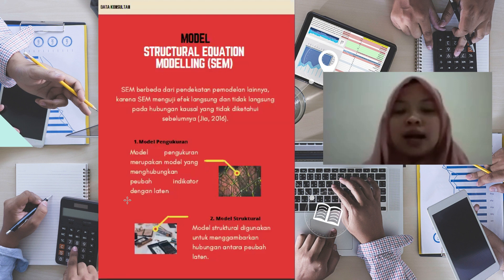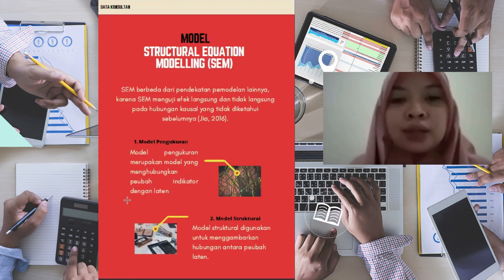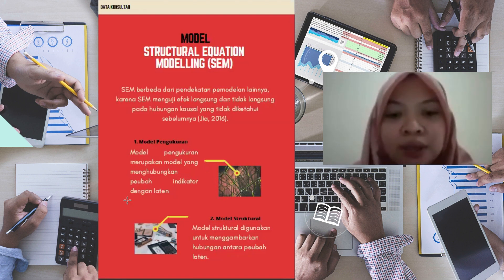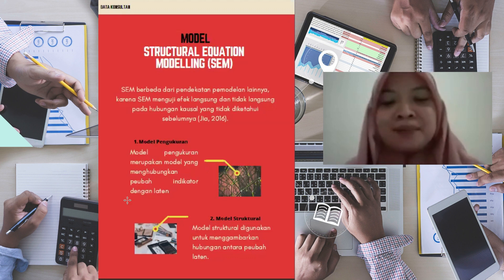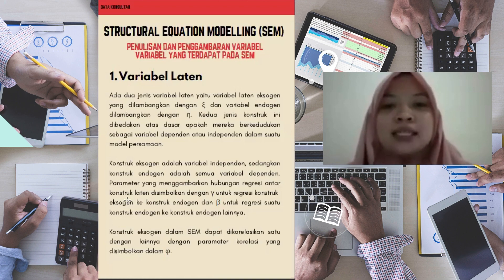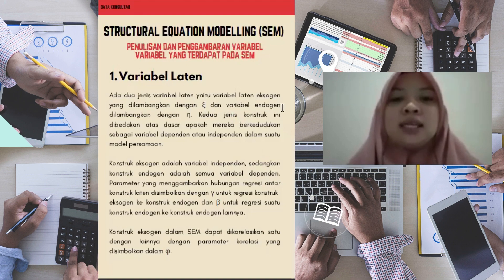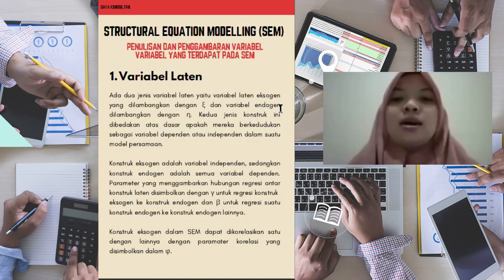Laten di sini adalah variabel independen dan dependen. Sedangkan model pengukuran di sini maksudnya adalah indikator-indikator dari suatu variabel. Model struktural digunakan untuk menggambarkan hubungan antara laten dan laten. Di SEM itu banyak simbol-simbol. Variabel laten itu disimbolkan, variabel eksogen biasa disebut dengan Xi, sedangkan variabel endogen dilambangkan dengan eta, sama artinya dengan variabel dependen atau disimbolkan dengan huruf Y.